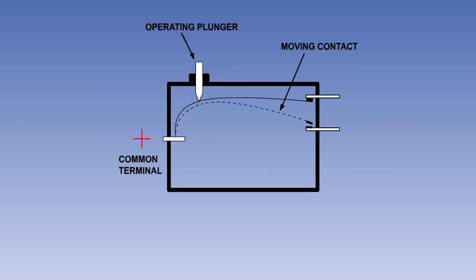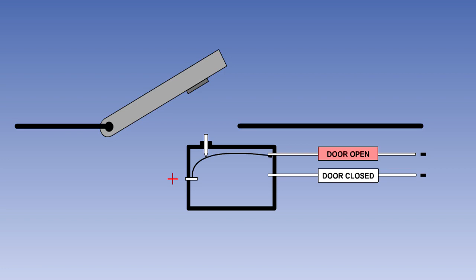In the typical example shown here, the moving contact is on a spring arm, which will hold it against the upper contact. When the component being monitored reaches the required position, the striker plate will push down on the plunger, causing the moving contact to move down and connect with the lower contact.